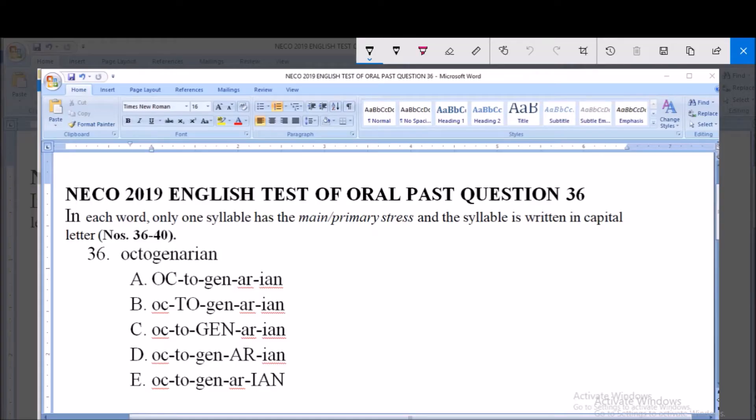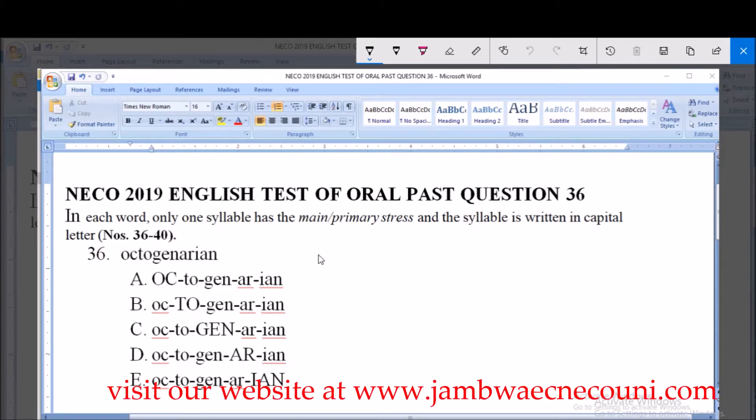Welcome. This is NECO year 2019 English test of oral past question. In this question, we are looking for the option that has the main or primary stress among the list of options. The area of stress is indicated with capital letters.